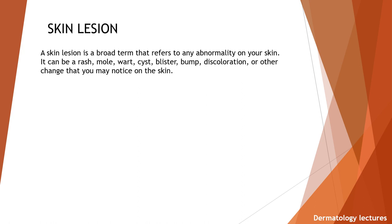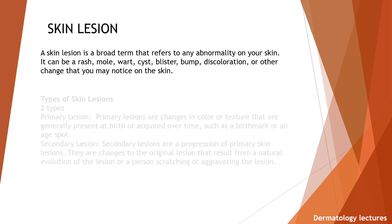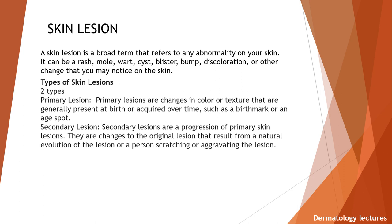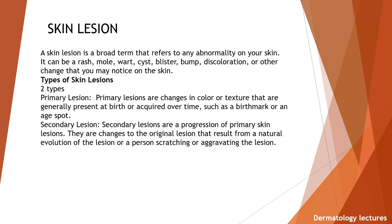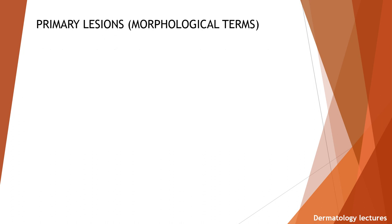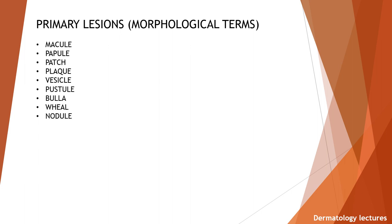Primary lesions are changes in color or texture that are generally present at birth or acquired over time, such as a birthmark or an age spot. Secondary lesions are progression of primary skin lesions — changes to the original lesion that result from a natural evolution of the lesion or a person scratching or aggravating the lesion. First of all we will discuss the primary lesions: macule, papule, patch, plaque, vesicle, pustule, bulla, wheal and nodule.